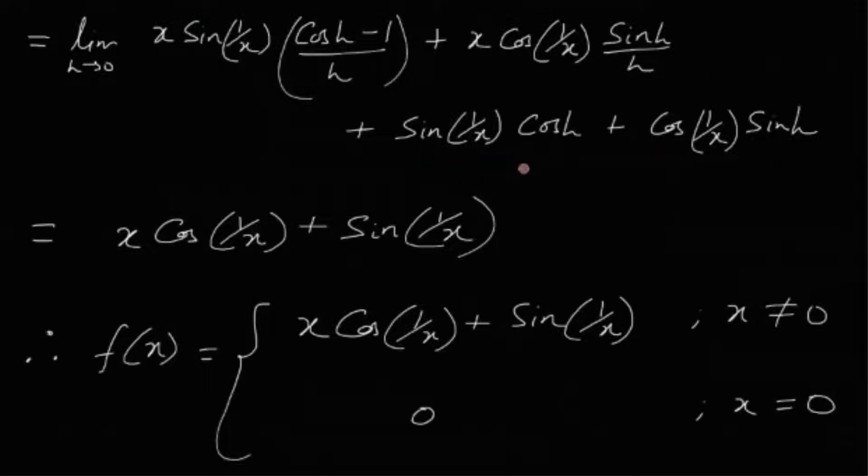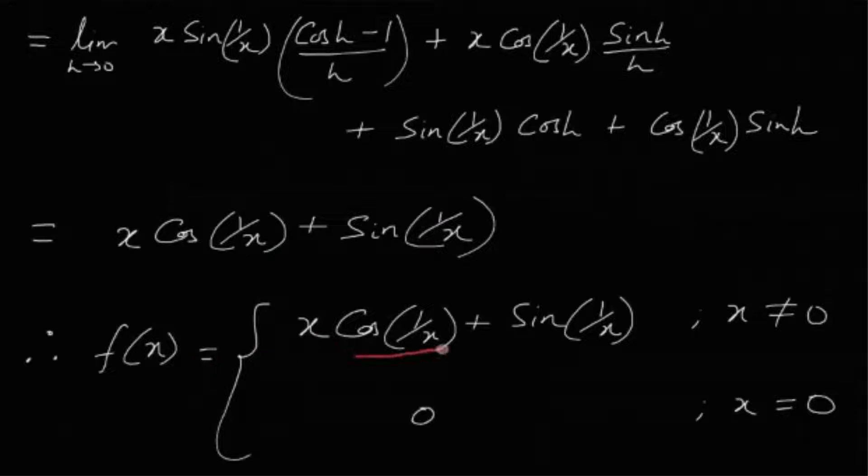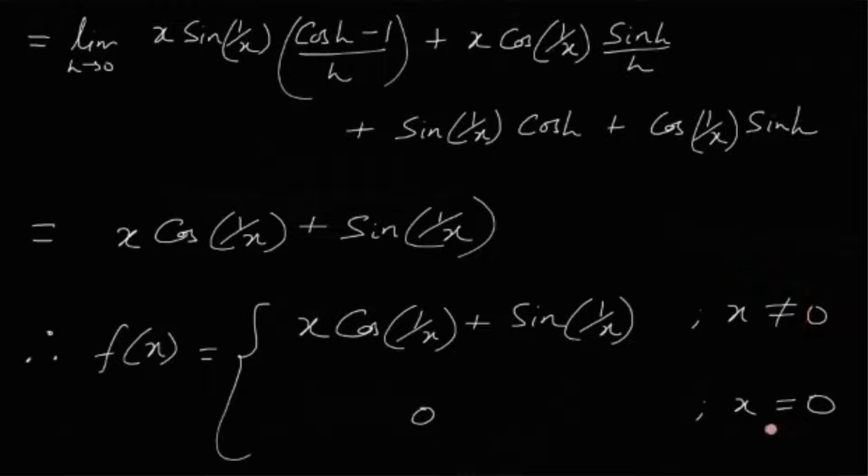Now if you can see, the actual limit problem is very easy. We know that this is actually 0, this part (cos(h)-1)/h, and this part is 1, and the remaining part obviously this part is 1 and this part is 0. So ultimately everything boils down to x cos(1/x) plus sin(1/x), that means f(x) is actually nothing but x cos(1/x) plus sin(1/x) when x is non-zero and 0 when x is 0.